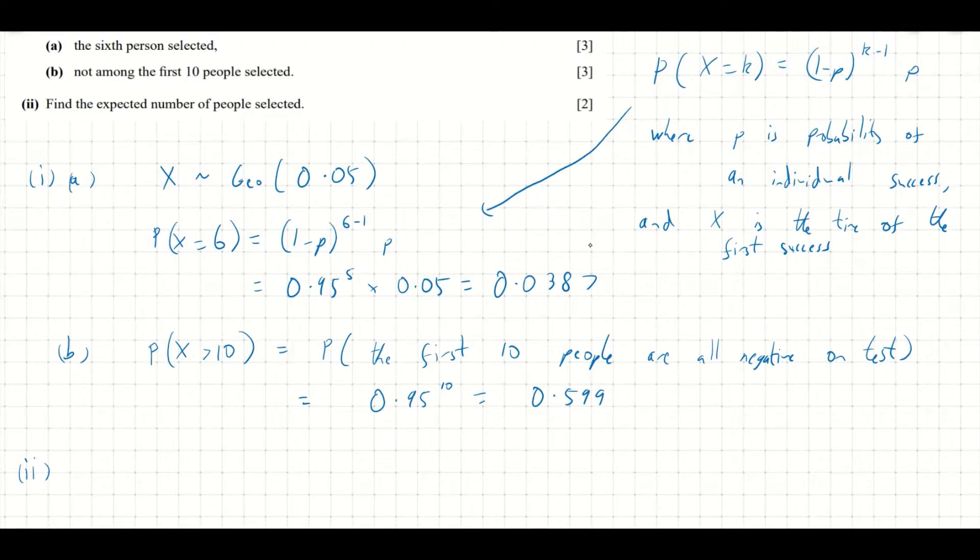Well, the geometric distribution has mean 1 over p. So the expected value of X is 1 over p. Well, in this case, it's 1 over 0.05, which is 20. And that's it. So that's the expected number of people we have to select to find our first person with this feature. It just uses this formula for the expected value of a geometric distribution, which is just 1 over p.